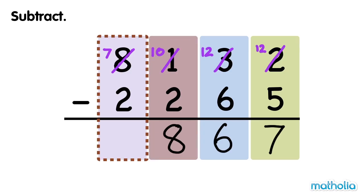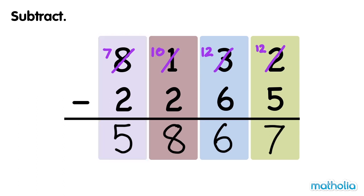Subtract the thousands. 7 thousands minus 2 thousands equals 5 thousands. 8,132 minus 2,265 equals 5,867.